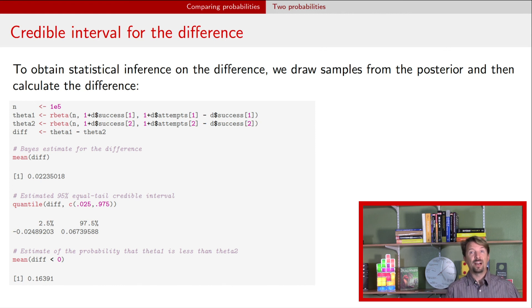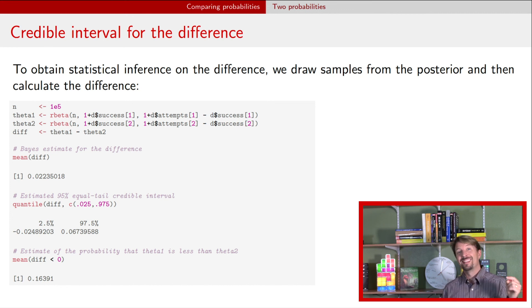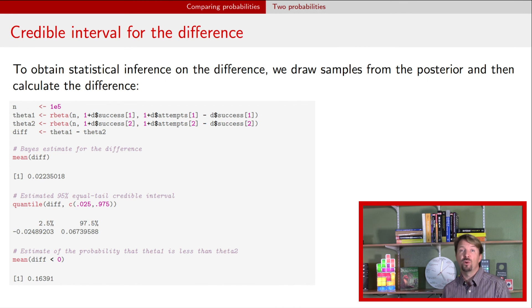That was all showing examples from both a frequentist and a Bayesian perspective about how you might compare two probabilities. In the next video, we will talk about what you do when you have more than two probabilities. Hope to catch you there.